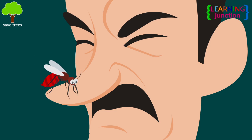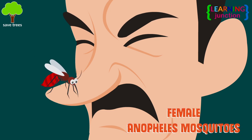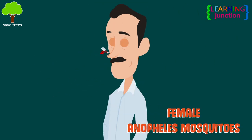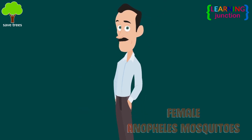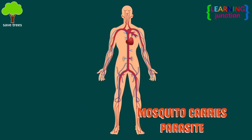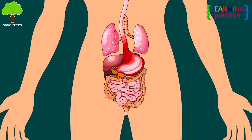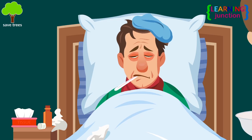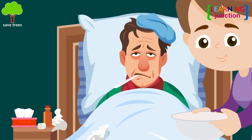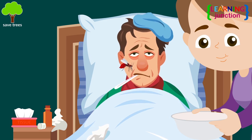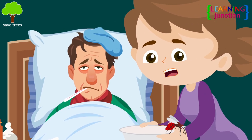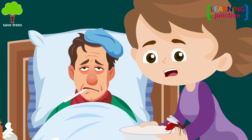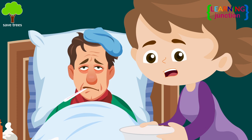Malaria is transmitted by infected female Anopheles mosquitoes. When someone gets bitten by a mosquito which carries the malaria parasite, the parasite enters into the bloodstream and is then carried to the liver where it multiplies. If a mosquito bites someone while they have malaria, it will get infected and can then transmit the parasite to the next person it bites.